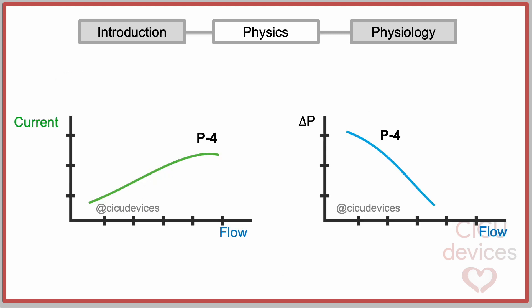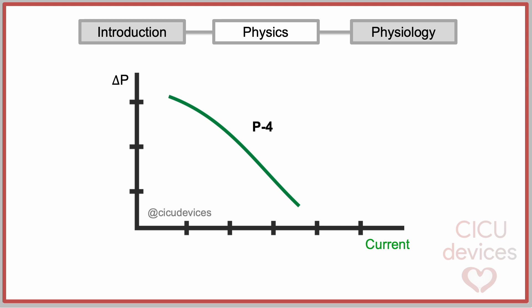In these graphs, we can observe the relationship between current and flow, and between pressure difference and flow for a specific rotational speed or P level. In this one, the relationship between pressure difference and current consumed by the device is represented. The consumed current has an almost linear inverse relationship with the pressure gradient.